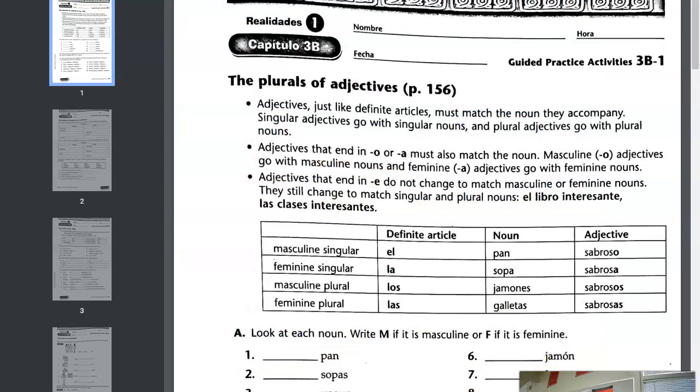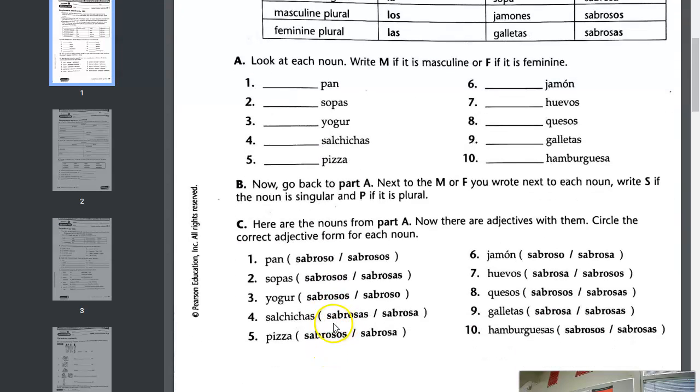So pan is singular. Sabroso is singular. Sopas is feminine plural. Sabrosas is feminine plural. That's a match. Yogurt is masculine singular. Sabroso is masculine singular. Salchichas is feminine plural. Sabrosas is feminine plural. So pick the adjective that matches according to gender and according to number.